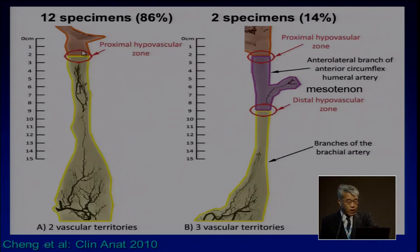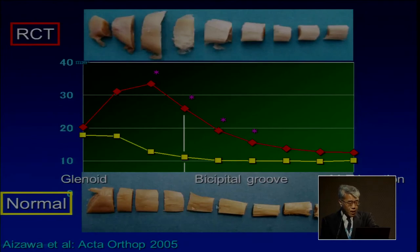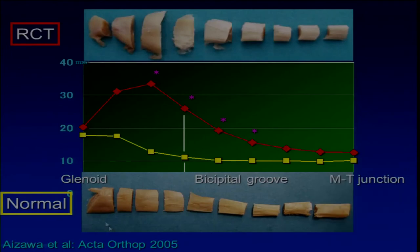In 14% of cases, they have a mesotendon and another vascularity, so in this type there are three vascular territories and two hypovascular zones. But most cases have the two-territory pattern. This may be related to the degenerative tear of the long head of the biceps. In a normal biceps tendon, it is widest at the origin from the glenoid, but if there is a rotator cuff tear, it becomes thick and wide, especially at the entrance into the groove, and may get stuck there.